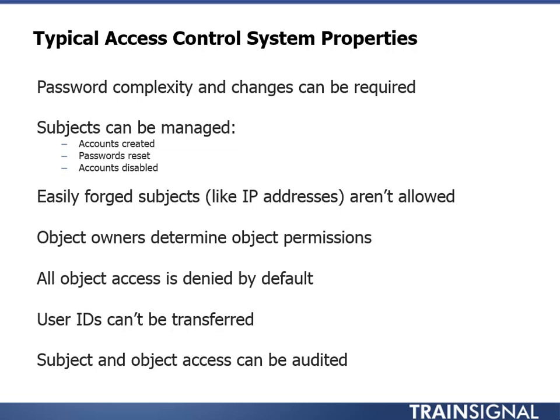The last example is that subject and object access can be audited. Many systems 10 to 20 years ago didn't provide any sort of auditing, but nowadays every system gives you the option of recording something in the log. Auditing typically isn't enabled by default because it can use up a lot of resources and create a lot of junk in your log files. But it is part of the access control system, and in fact many organizations and government regulations require that access control systems implement auditing and store those logs for a certain amount of time.